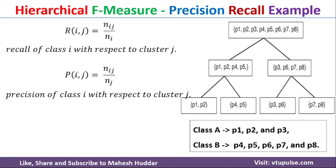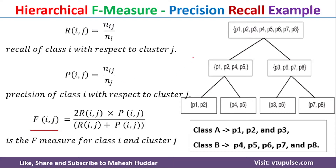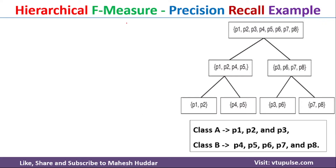Once you know this precision and recall, we can easily calculate the F-measure. F-measure equals 2 times recall multiplied by precision, divided by recall plus precision. Now we will go through the clusters one by one and calculate the F-measure, and finally we will calculate the F-measure for the entire dataset. The first cluster contains all eight objects.